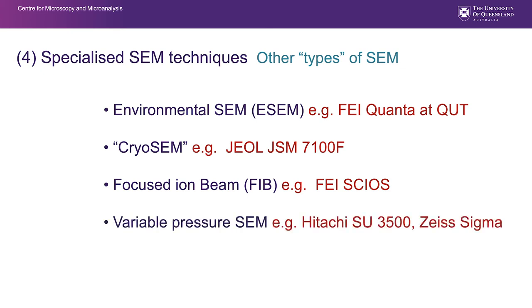Variable pressure SEM is worth spending a little more time on. It uses the same types of processes as the environmental SEM but doesn't go quite as far. It allows us to control the pressure in the chamber and use positive ions to remove charge from the sample, enabling fairly high accelerating voltages on samples that are normally insulating and very difficult to image otherwise. This allows micro-analysis requiring those high KVs.